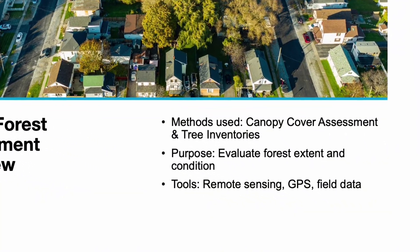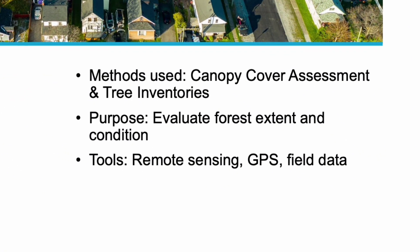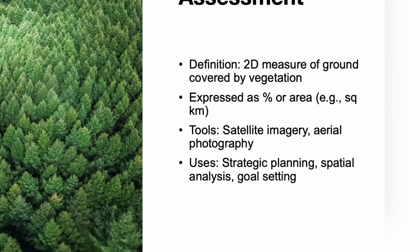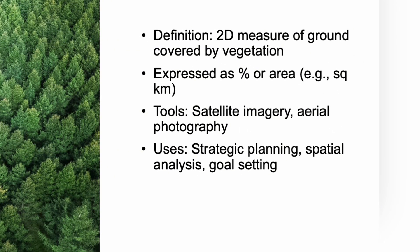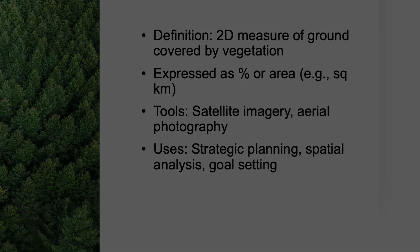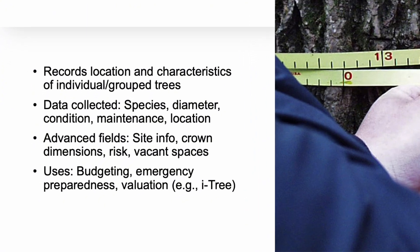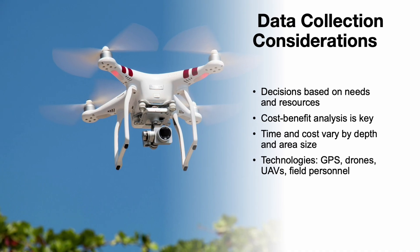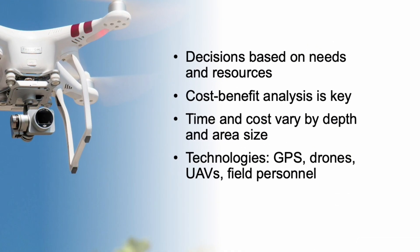Urban foresters assess the health and extent of tree resources using two key tools: canopy cover assessments and tree inventories. A canopy cover assessment measures the area of the ground covered by tree canopies, expressed as a percentage or total area, typically done using satellite images or aerial photography. It's valuable for high-level planning, tracking goals, and identifying areas that lack canopy. A tree inventory records detailed information on individual trees or tree groups, including species, size, condition, and maintenance needs, and is used for planning, budgeting, and understanding the structure and value of the urban forest. Modern assessments rely on GPS, drones, satellite data, and field observations.